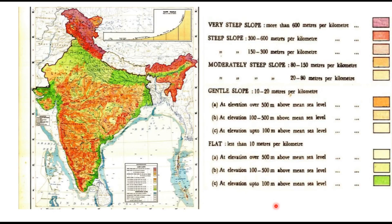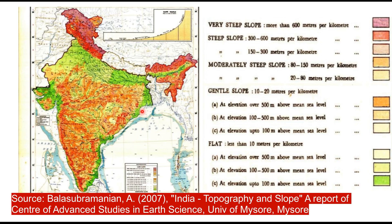Looking at the map of India provided by the Survey of India, different colors indicate different slopes. Flat terrain can be either coastal or inland. This flatland is not strictly horizontal, but the slope or elevation difference may be less than 10 meter per kilometer. Vast regions with a gradient less than 10 meter per kilometer exist all along the coastal area of India, shown in lime green color on this map — these are called coastal flatlands.